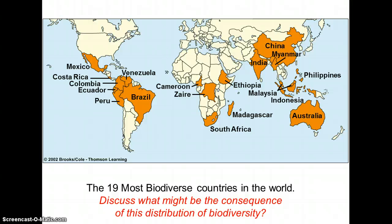Take a moment to pause and think about this question: not every place on the planet is highly biodiverse. There are 19 most biodiverse countries in the world. Think about whether these are LEDCs or MEDCs and what the implications of that are. What are the implications of this biodiversity being so unevenly distributed across the globe? Does that make it harder to create conservation policies, which we'll talk about later?